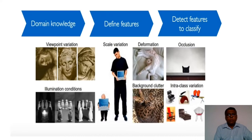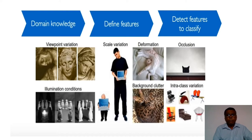Traditional computer vision suffers from several issues: viewpoint variation, different camera angles, scale variation, deformation — for example, a cat sleeping in an unusual position should still be recognized as a cat — as well as occlusions, inter-class variations, background clutter where objects and background are similar, and illumination conditions. Because of these, a lot of pre-processing is required before feature extraction.